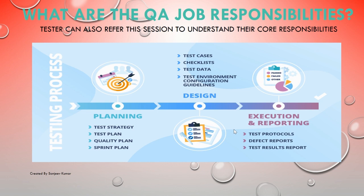Then you're going to create test plan documents, and of course you're going to think about how you're going to fulfill the quality metrics of that application. If there is a sprint planning, you think about what test cases are going to be covered in that particular sprint. Then you move to the checklist document part, test data preparation, test environment configuration, and later on you execute the test cases and report any issues to the team.